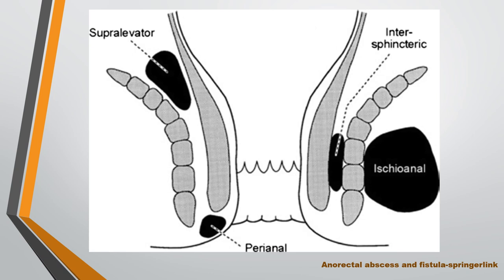Abscesses are classified according to the space where they are located. When the abscess is in the intersphincteric space, it is called an intersphincteric abscess. When in the ischioanal space, it is called an ischioanal abscess. When in the supraelevator space, it is called a supraelevator abscess. When in the perianal space, it is called a perianal abscess.